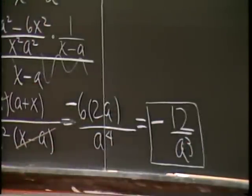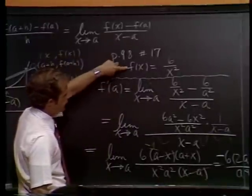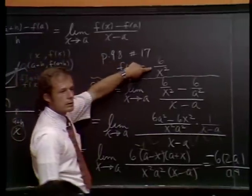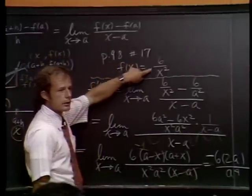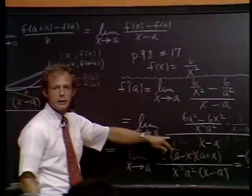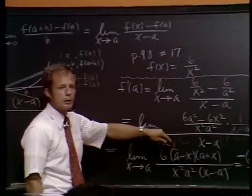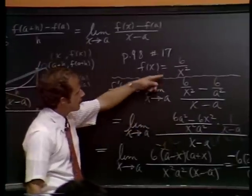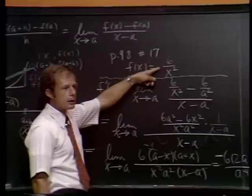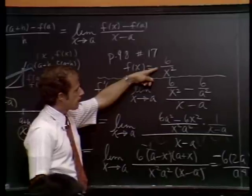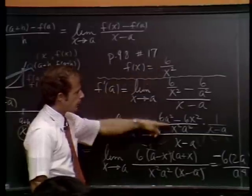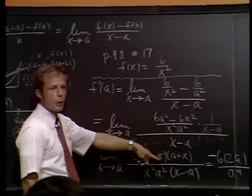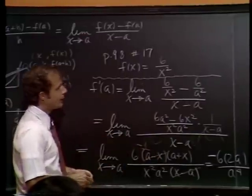So it looks like to me we get a minus 12 over a cubed as our answer. So that was the derivative of f of x if it were 6 over x squared. This is a so-called long way. And, of course, we expect you to be able to do this for some, I won't say easy functions, but they're not all that terribly complicated either.